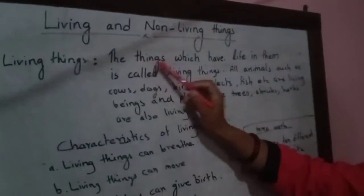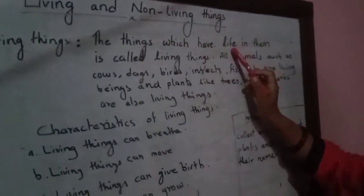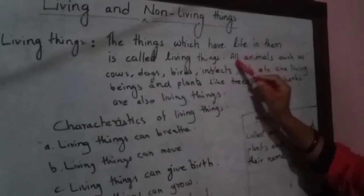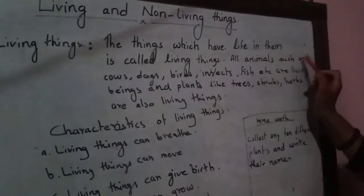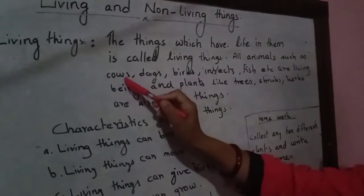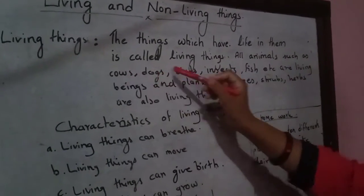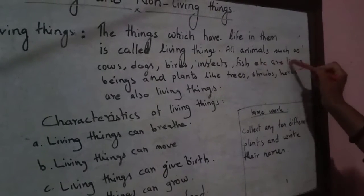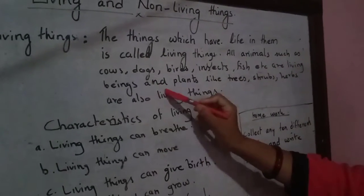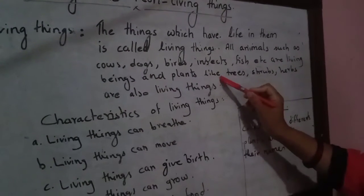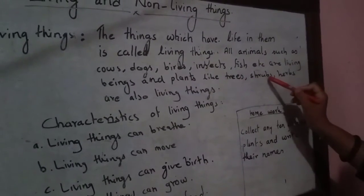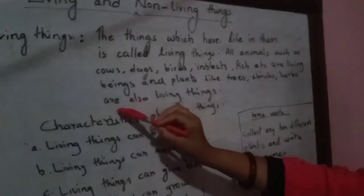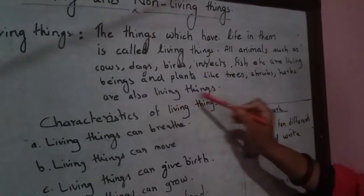Living things — the things which have life in them are called living things. All animals such as cows, dogs, birds, insects, fish, etc. are living things. Plants, trees, and shrubs are also living things.